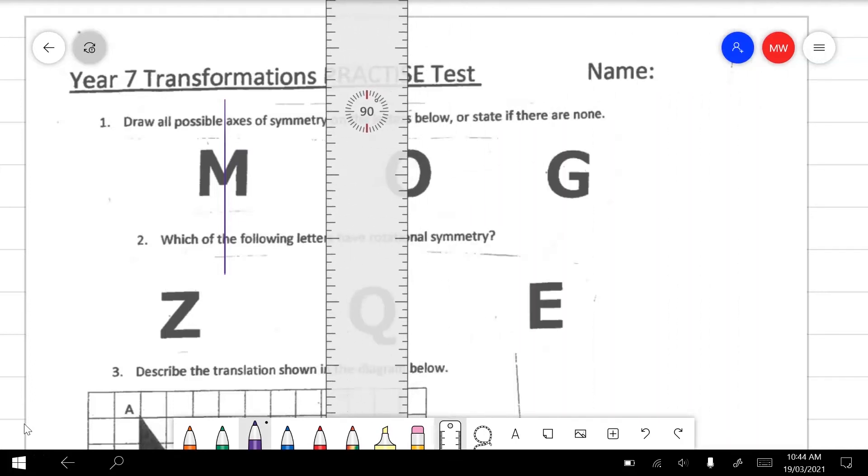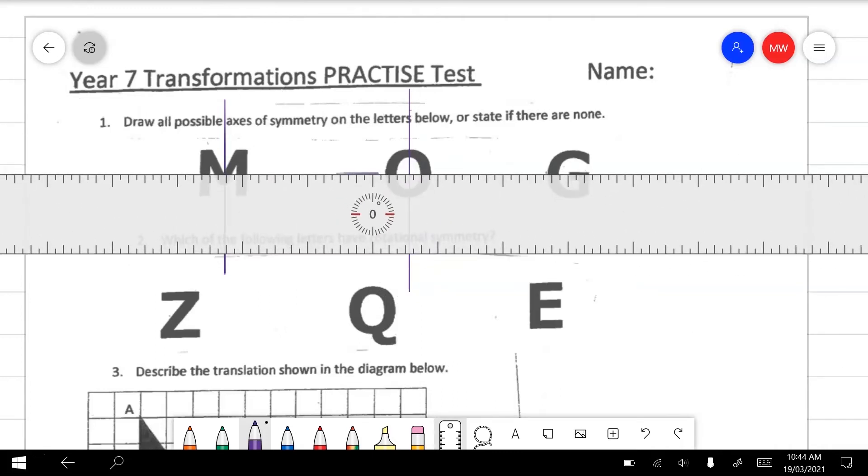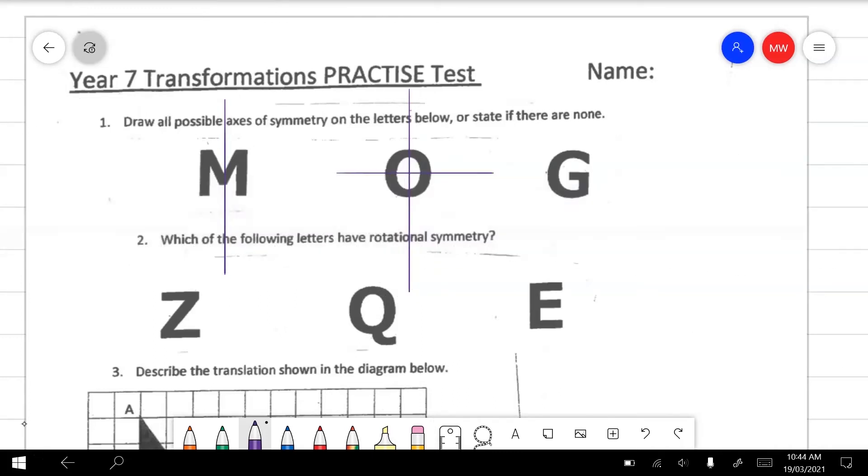O would have two. It would be cut this way or this way. There aren't any axes of symmetry for G. If we went and chopped that one in half it's different on both sides. So this one doesn't have any.